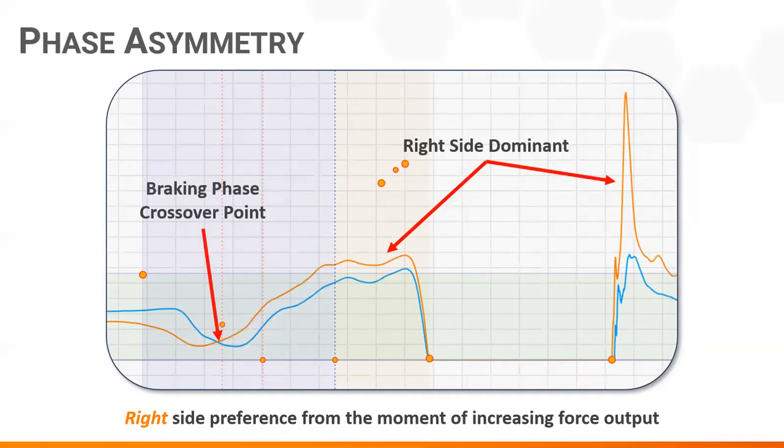So the left side is above upon standing and also in unweighting, but then as soon as things start to tense up and get a little bit tougher, the right side kicks in and takes over, especially during the landing phase.